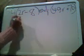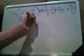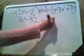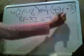So the first thing I would do, because you really don't want to have parentheses, is to distribute. So 4 times 2R would be 8R, 4 times negative 8, because you don't want to forget this, is negative 32, equals 1/7th of 49 7R, and 1/7th of positive 70 would be positive 10.